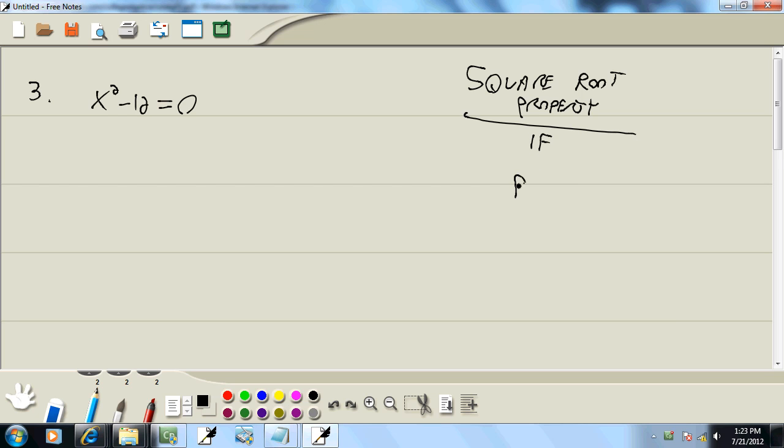The square root property says if you've got something squared equals something else. And that's pretty vague, isn't it? But it really is that vague. Then you drop your squared and you put a plus or minus square root around the other side. Now, key on this is you have to have the part that's squared by itself.